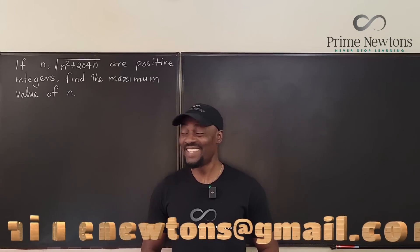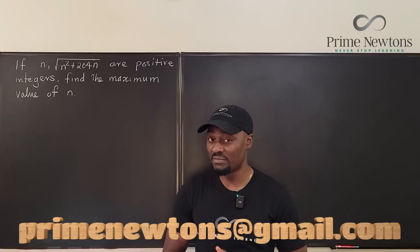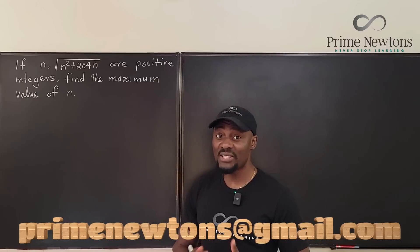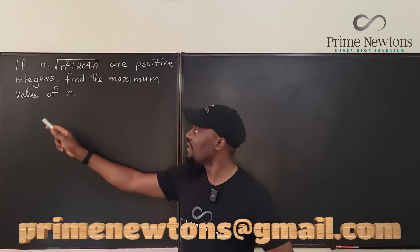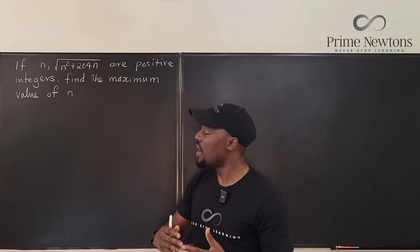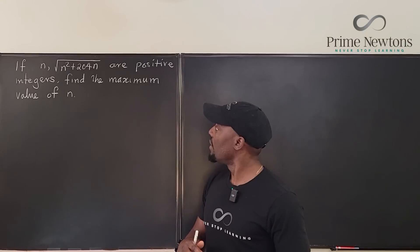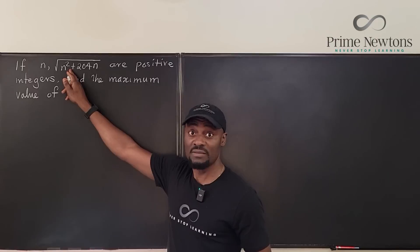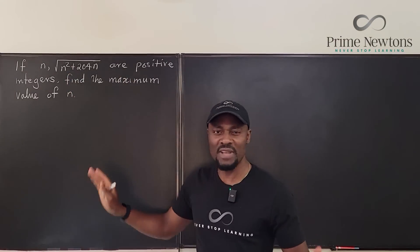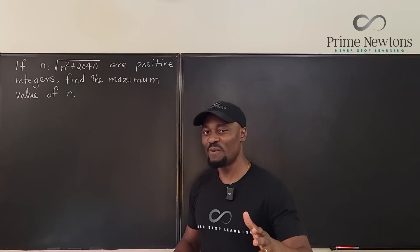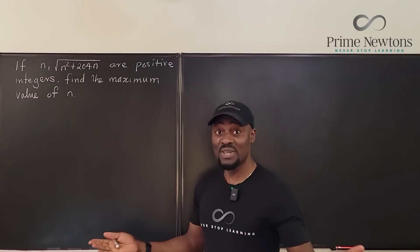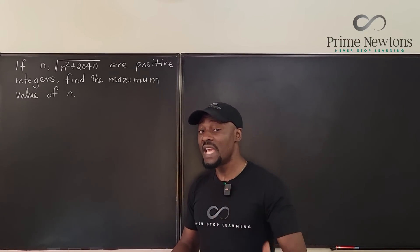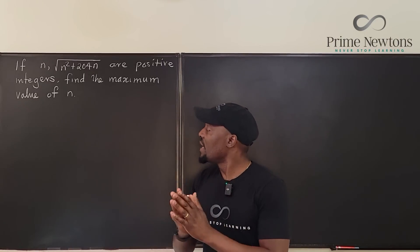Welcome to another video. This is a Math Olympiad problem, and the mission is to find the maximum value of n if n and the square root of n squared plus 204n are positive integers. We're going to do this problem.